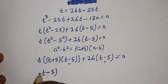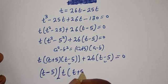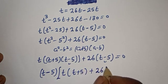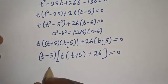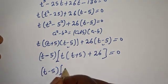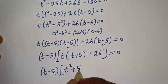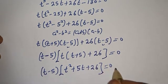Now (t minus 5) is common. Factoring it out: (t minus 5) bracket [t(t plus 5) plus 26] is equal to zero. Expanding: (t minus 5) bracket [t squared plus 5t plus 26] is equal to zero.